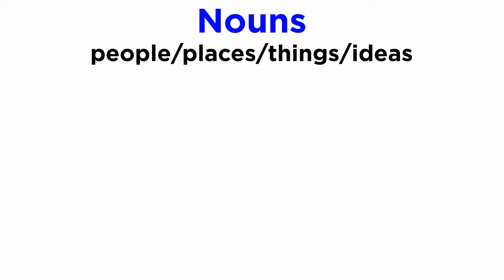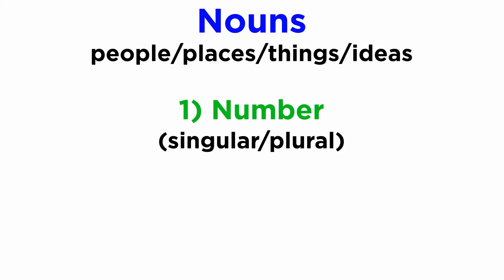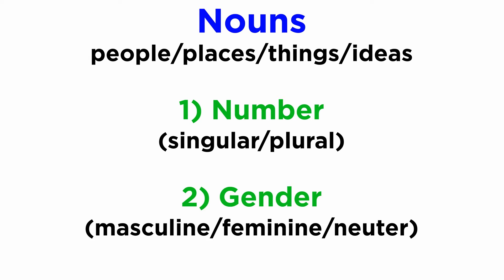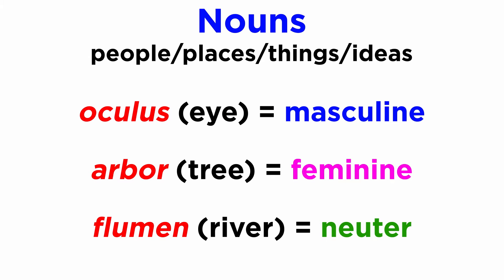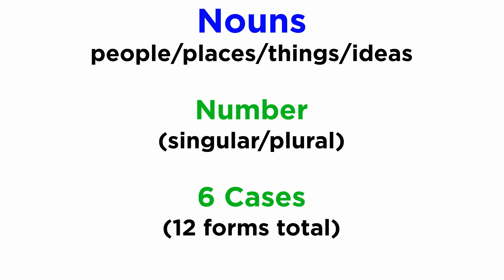However, we will find nouns to be very different in Latin. Like in English, nouns have number, meaning singular or plural, but they also come in three genders: masculine, feminine, and neuter, even for inanimate objects. The genders are used very differently in Latin, and in many instances they have little to do with the word's meaning. Genders must be memorized as we learn nouns. Nouns also have six cases, which means every word will have twelve different variations of form.